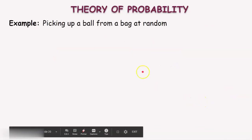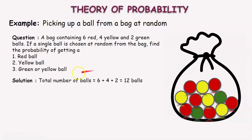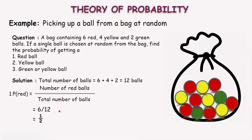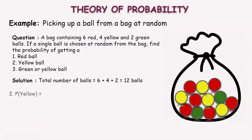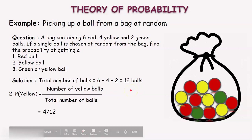In another example, a bag contains 6 red, 4 yellow, and 2 green balls. If a single ball is chosen at random from the bag, find the probability of getting a red ball, a yellow ball, and a green or yellow ball. The total number of balls is 6 plus 4 plus 2, which equals 12, and this is the total number of possible outcomes. P(red) equals number of red balls divided by total balls, which is 6 by 12, equal to 1 by 2. P(yellow) equals 4 by 12, which is 1 by 3.